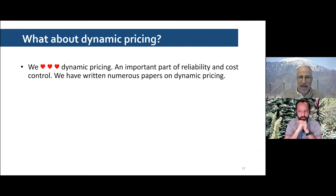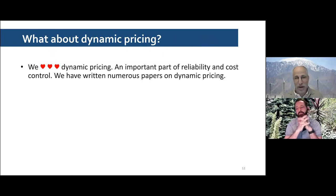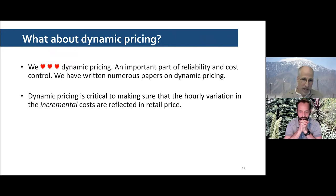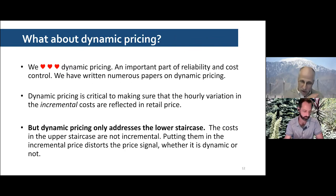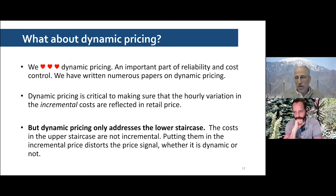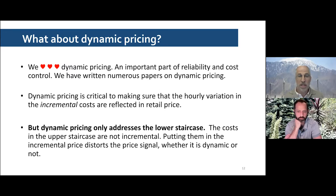Some people ask: can't you solve this with dynamic pricing? We love dynamic pricing — it's clearly important for reliability and cost control, and critical to ensuring hourly variation in incremental cost is reflected in retail price. But importantly, dynamic pricing only addresses the lower staircase — the marginal cost — and that's all it should address. It doesn't address the additional load placed on the price of electricity by collecting all these fixed costs through a volumetric charge. Dynamic pricing is part of the solution, but it won't solve this fixed cost recovery problem.